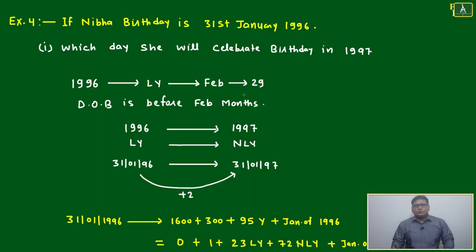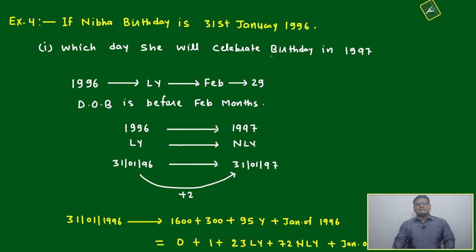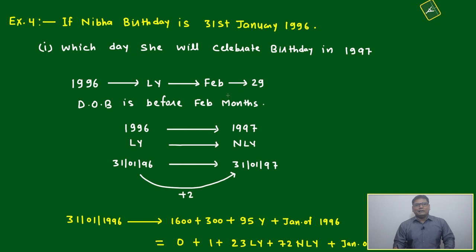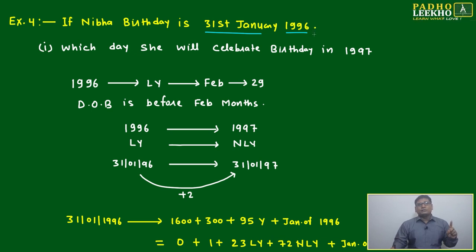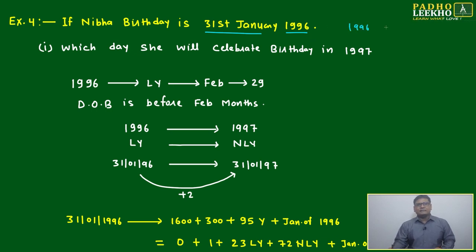Welcome to this birthday-type question — a very typical calendar-based question. If Niva's birthday is 31st January 1996, the first thing we look at is whether the year is a leap year or a non-leap year. What is 1996? It is a leap year.